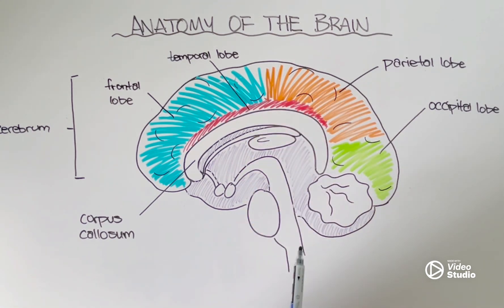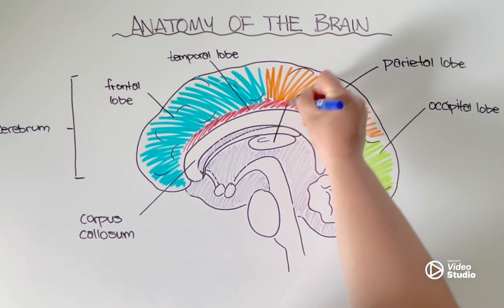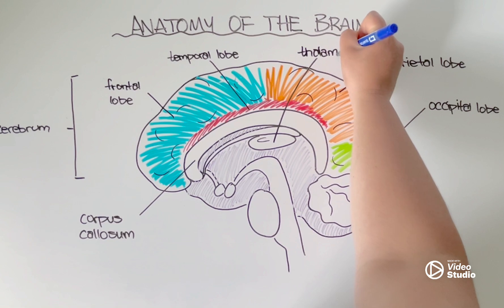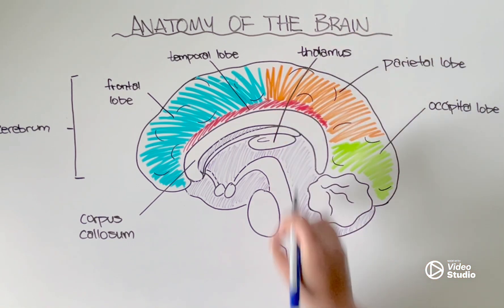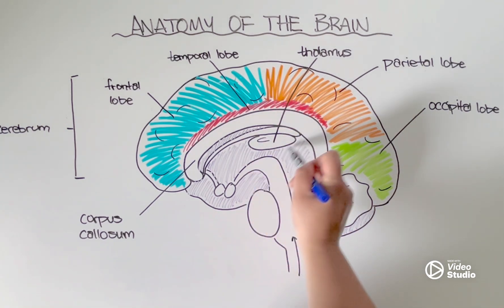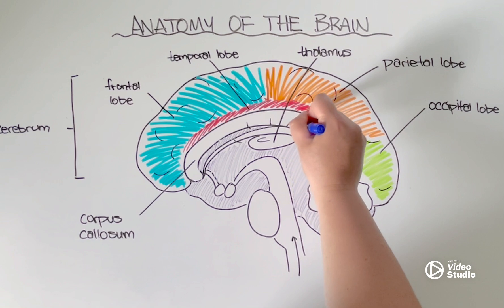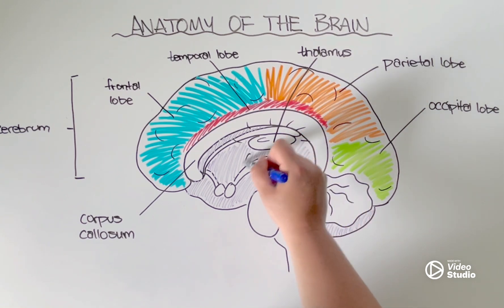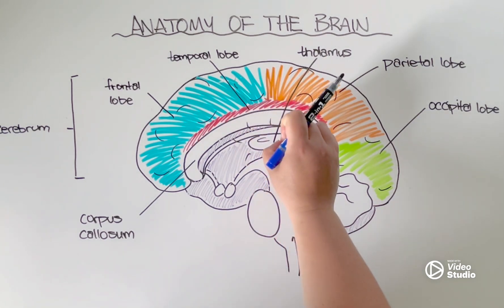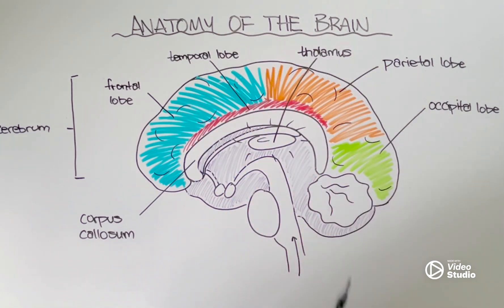Next, as we go further into the center of the brain, we have this structure here known as the thalamus. And the thalamus is just responsible for taking information that arrives through our spinal cord, processing that information, and then sending it out to the appropriate areas of the brain. We sometimes think of the thalamus as a relay station. It takes in information, figures out what to do with it, and then sends it off to be processed in other areas.